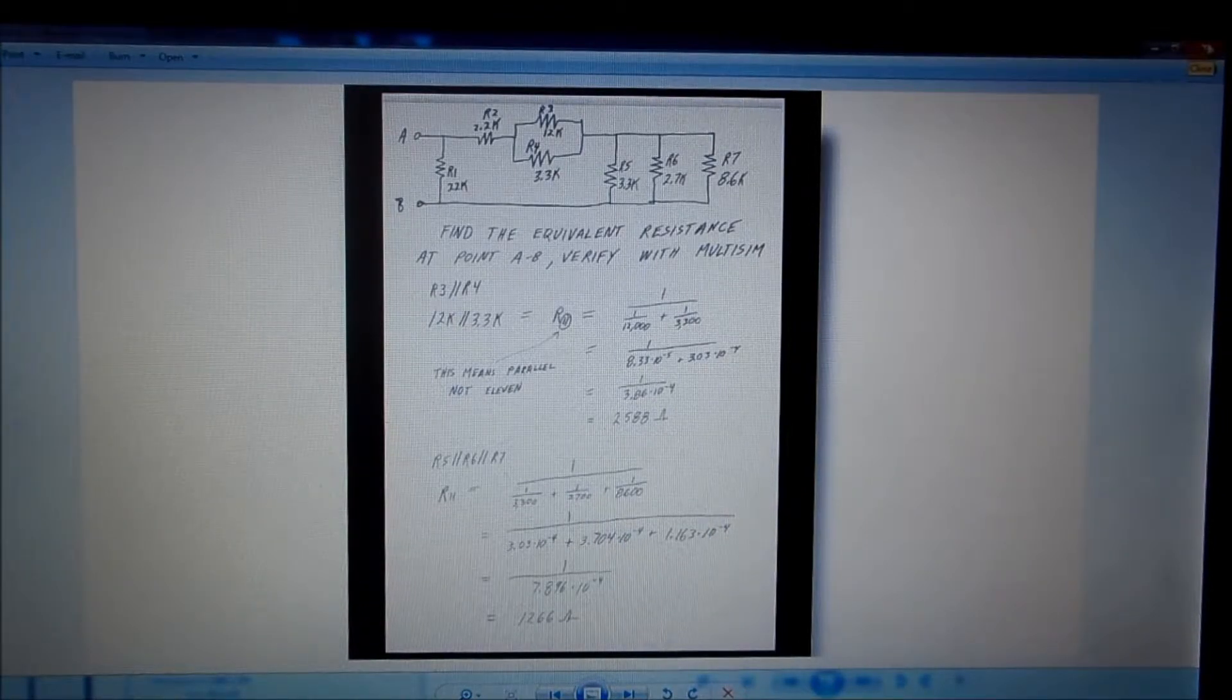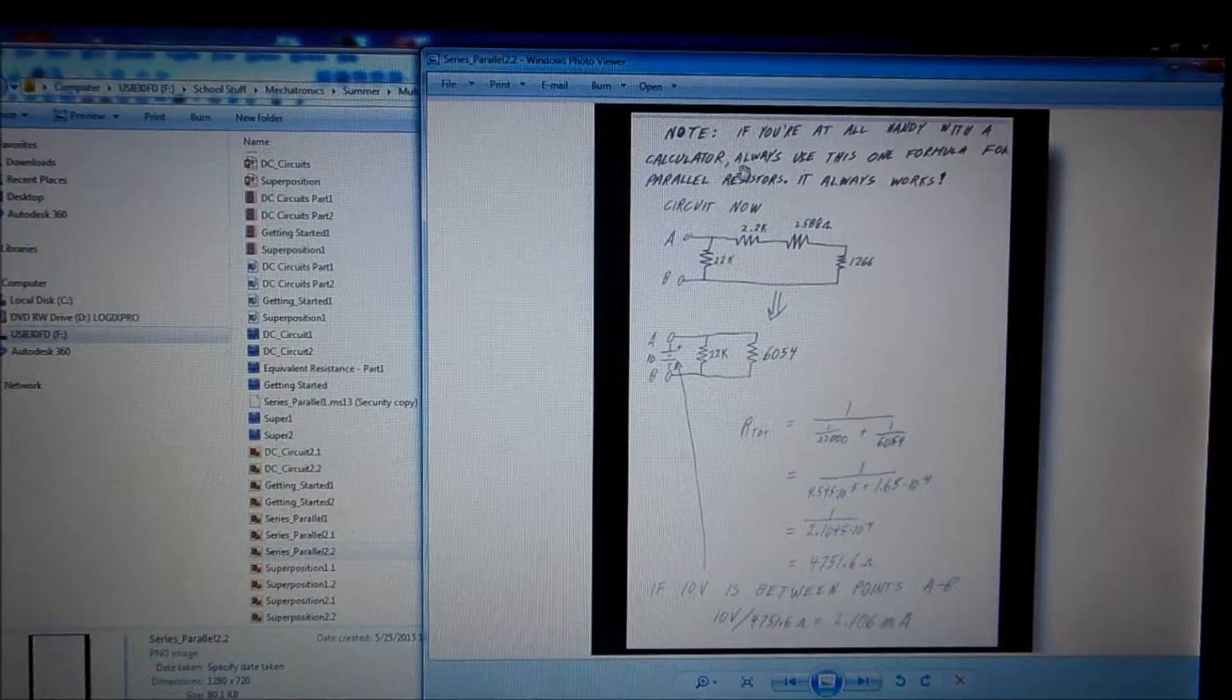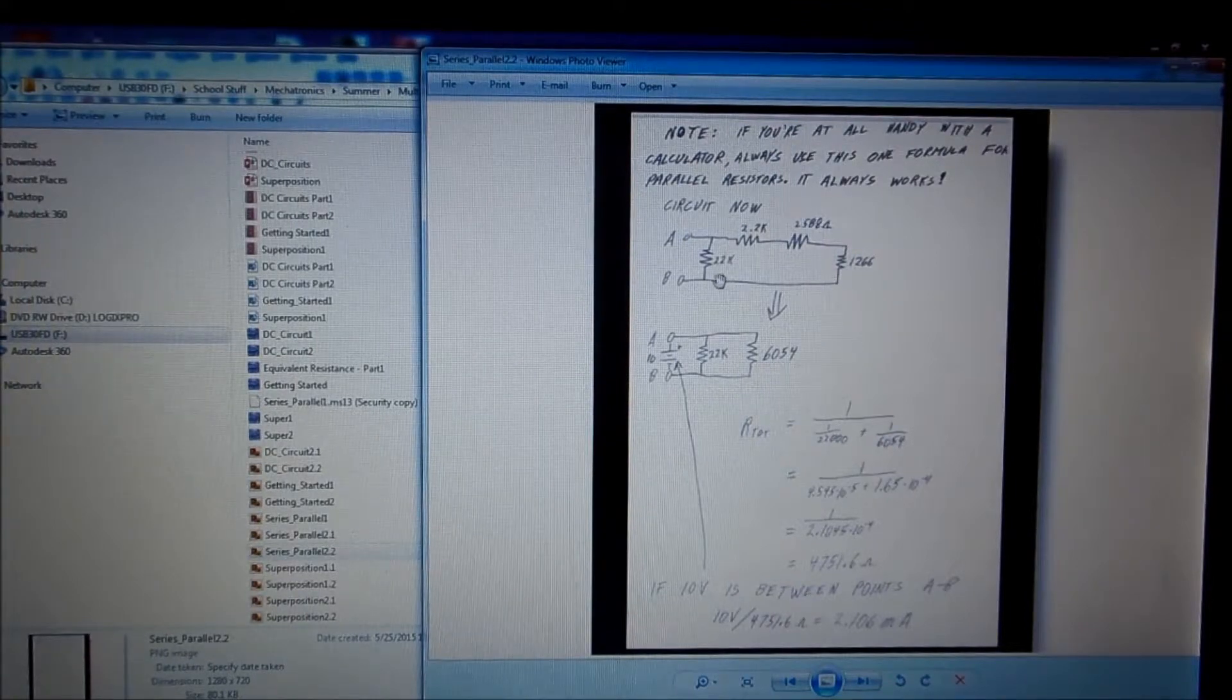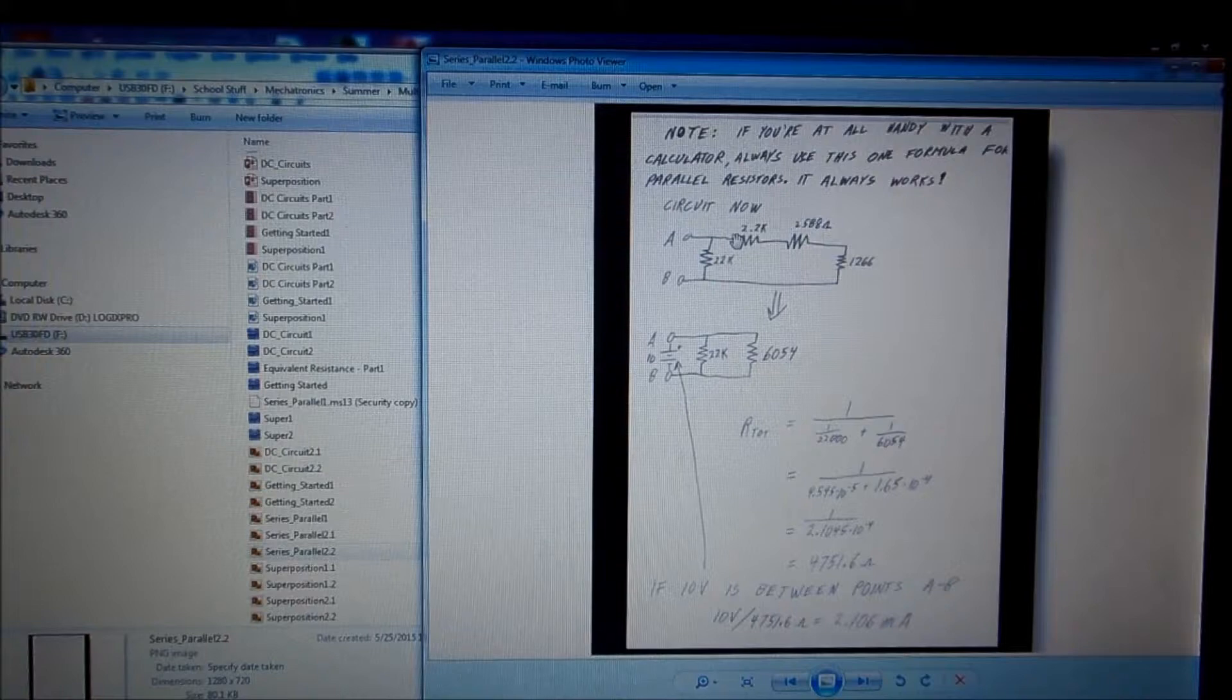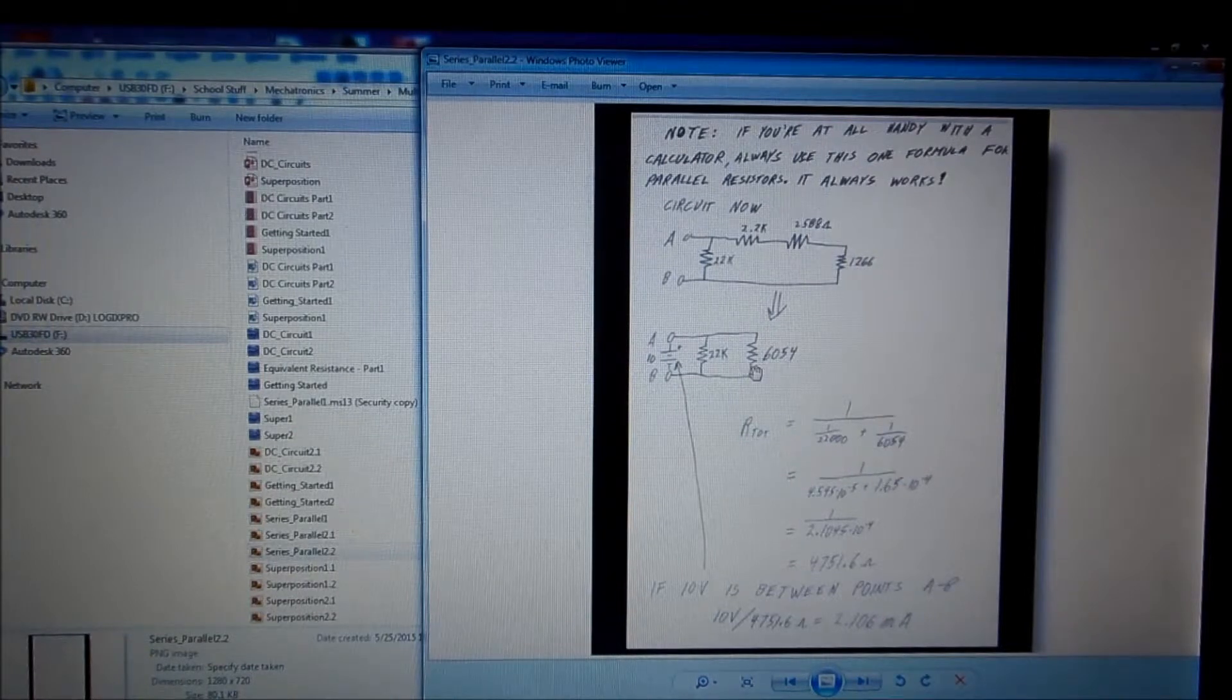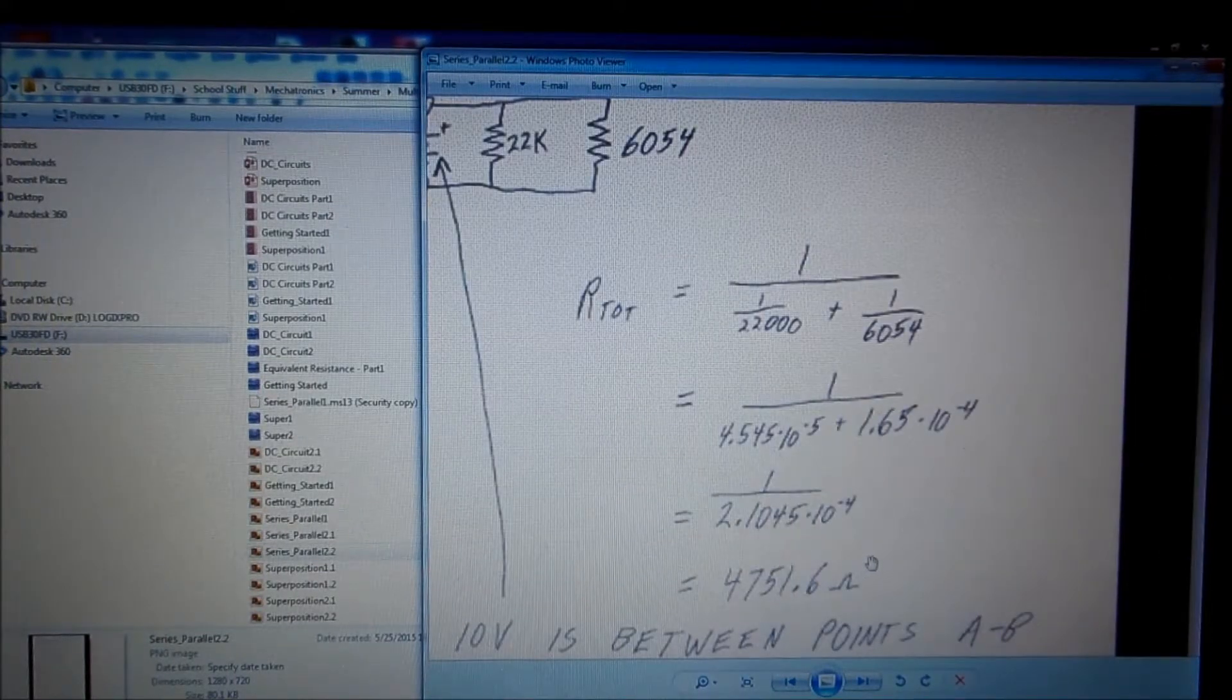And if we go to the next sheet, and this is kind of what I was saying. If you're handy with a calculator, always use that parallel formula. It always works, it's really simple. And so now what we have is this 22k in parallel with these three, which are all in series. So these three add up to 6054, and then we've got 22k. So that total resistance turns out to be 4651.